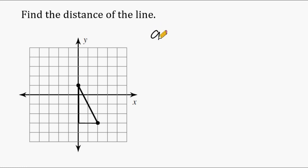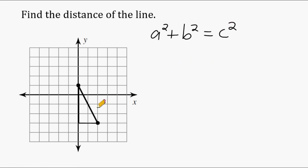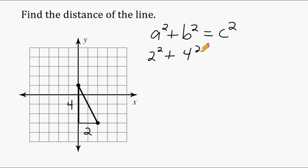Now remember, the Pythagorean Theorem states that if you take the squares of the two shorter sides and add them together, that is going to be equal to the square of the longest side, or the hypotenuse, of the right triangle. So let's take a look at the distance of the two triangle legs. This base right here has a distance of 2, and the height of the triangle has a distance of 4. So we're going to call this distance a, take 2 and square that, then take the length of this line, which is 4, and square that, and that's going to be equal to c squared.